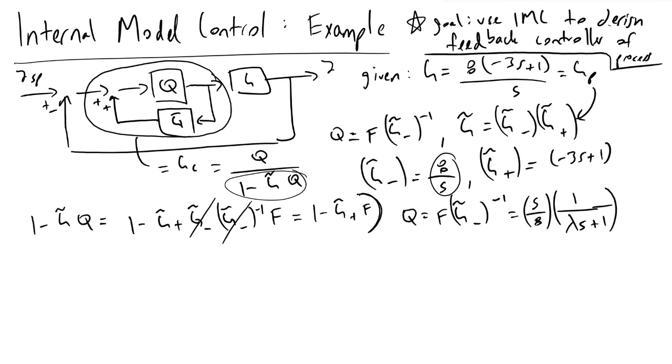Now if we turn back to our denominator here and look at this term, 1 minus, and then we plug in what G tilde plus is, we'll have minus 3s plus 1,